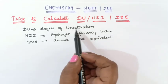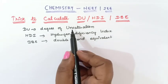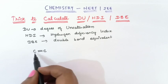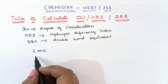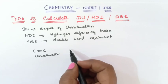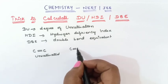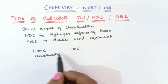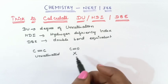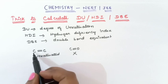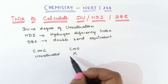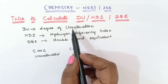Let us understand what unsaturation means. If there is a double bond between carbon and carbon, you say this is an unsaturated compound. For example, C double bond O also has a double bond, but if it is between carbon and oxygen it is not called an unsaturated compound. Unsaturation refers specifically to double bonds between carbon and carbon.